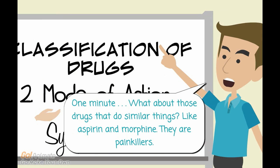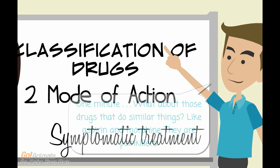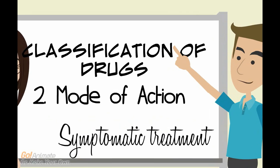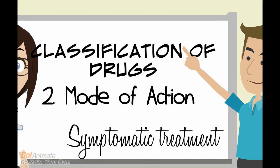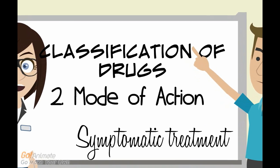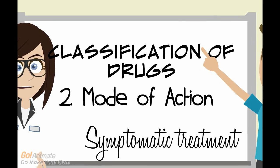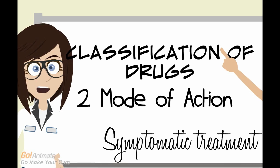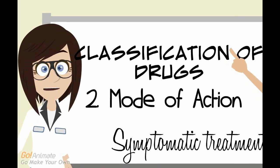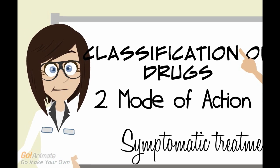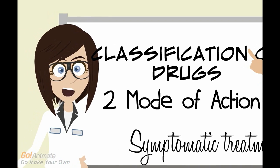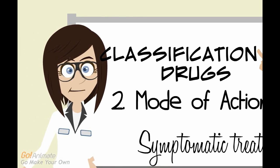What about drugs that do similar things, like aspirin and morphine? They are painkillers. Good question, Sam. Aspirin and morphine share similar modes of action and relieve similar symptoms, but act on different targets. So this is the drawback of this classification.